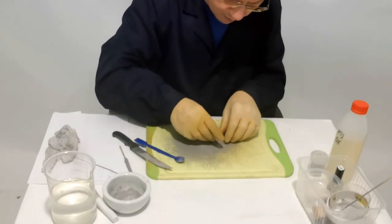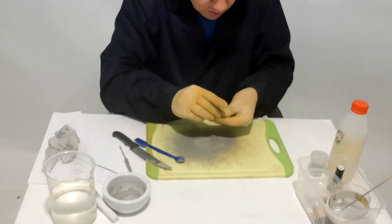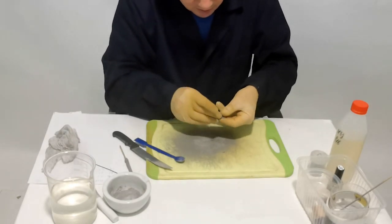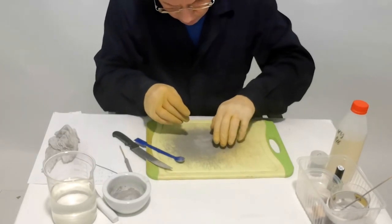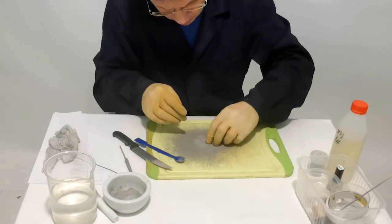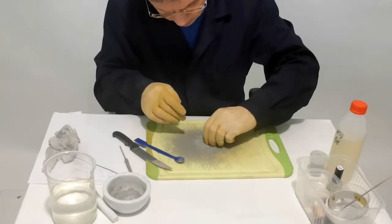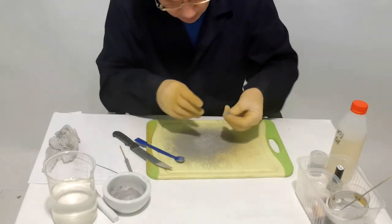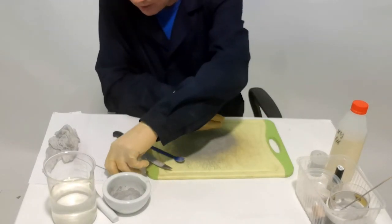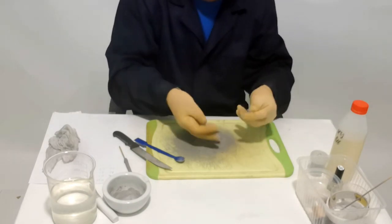Mix to the state of plasticine and sculpt on steel wire. We take a piece of steel wire and attach the mixture.